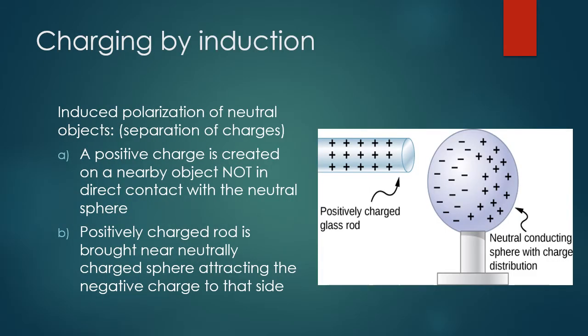Let's look at another example. We have a positively charged glass rod. If we bring it near a neutral sphere — meaning it has equal positive and negative charges — the positive charges on the glass rod attract the negative charges of the sphere, causing them to come near the surface where the rod is, and pushing the positive charges as far away as possible. So this positively charged glass rod induces a negative charge on the sphere through induction. It's called induction because the two objects become close but do not touch; if they touched, it would be called conduction.